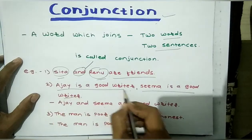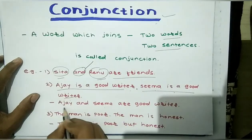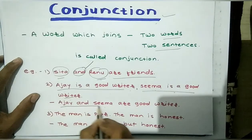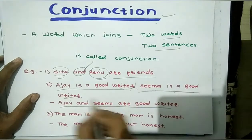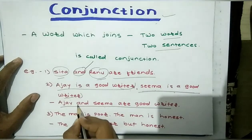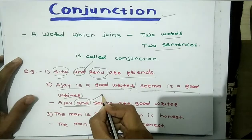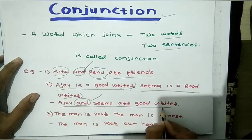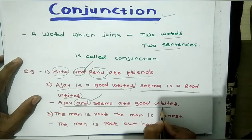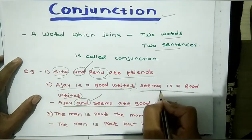For example: 'Ajay is a good writer' and 'Seema is a good writer' — these are two separate sentences. But using the conjunction 'and,' we can combine them into one sentence: 'Ajay and Seema are good writers.' The meaning has not changed. We have a simple and short sentence with the use of conjunction.